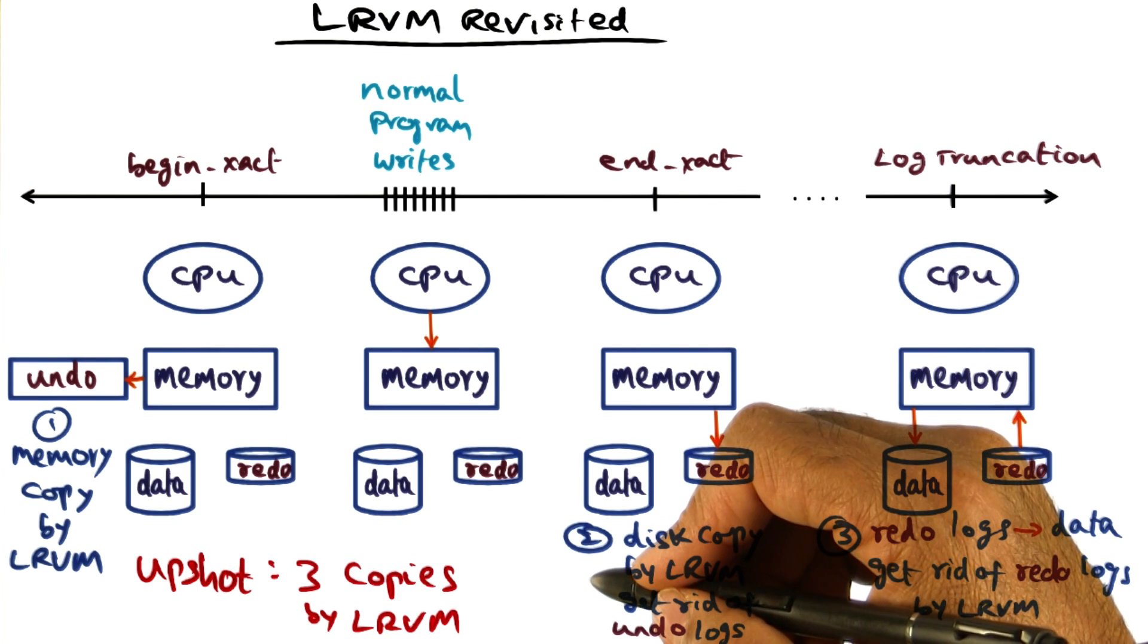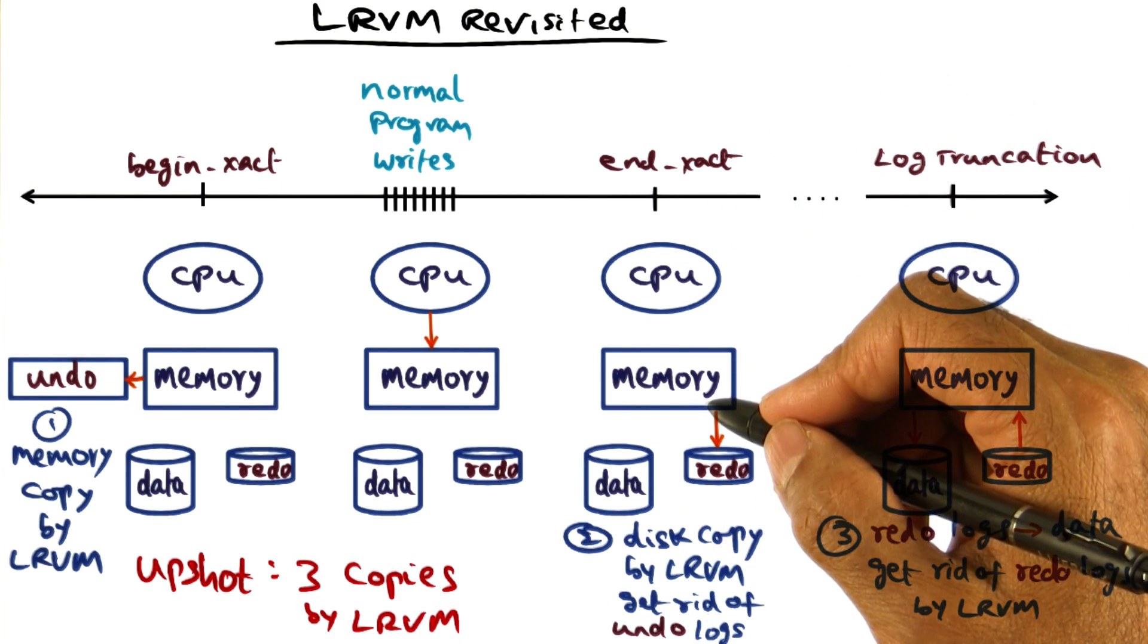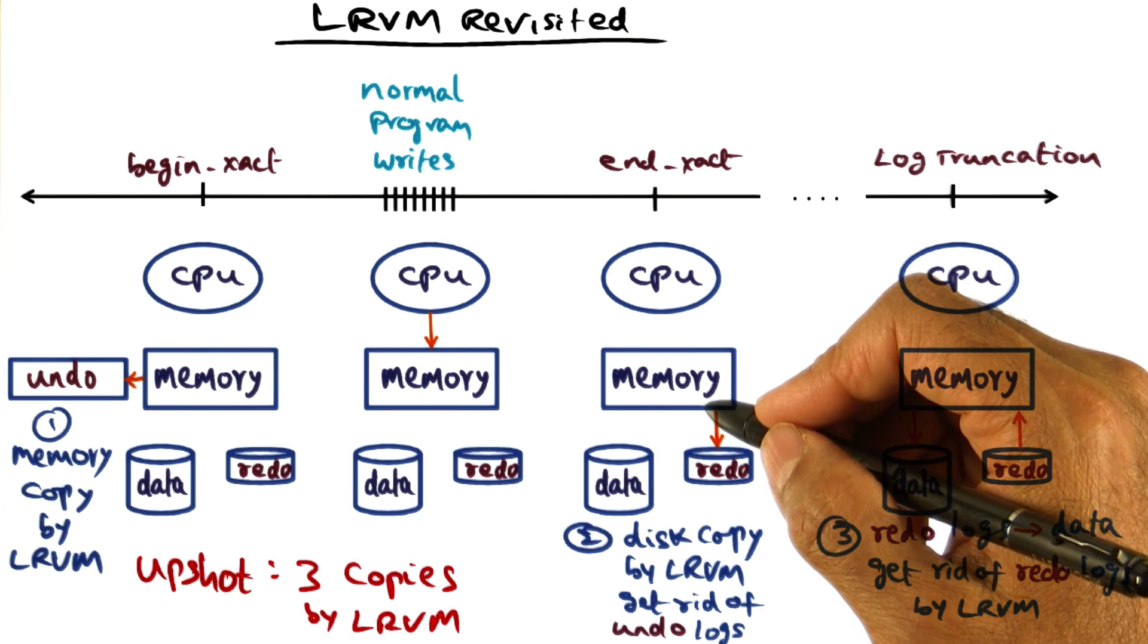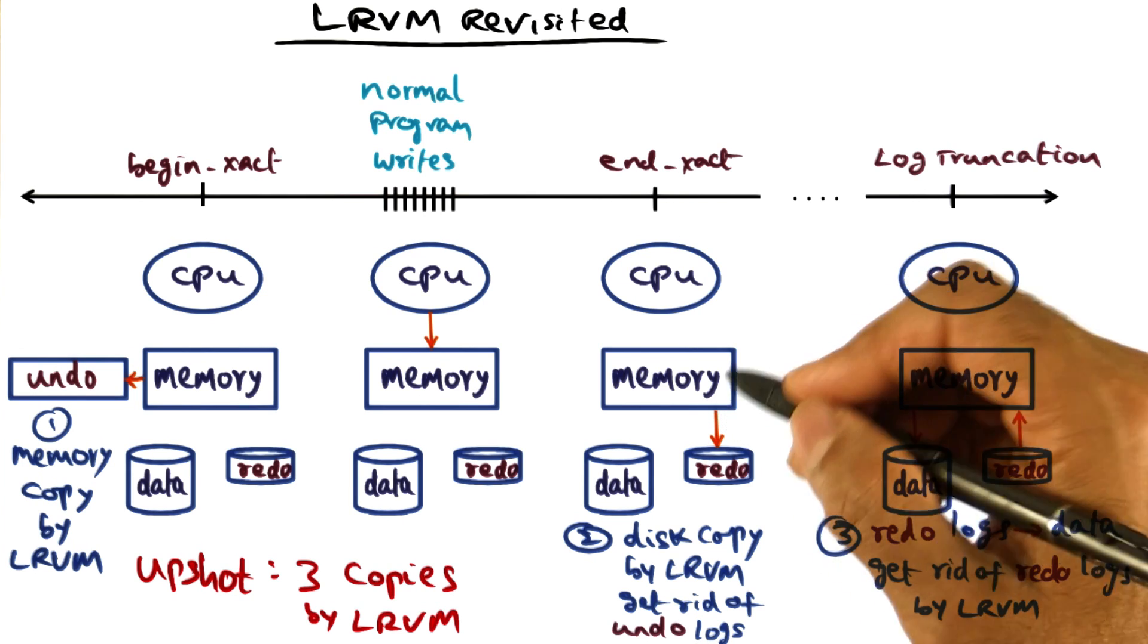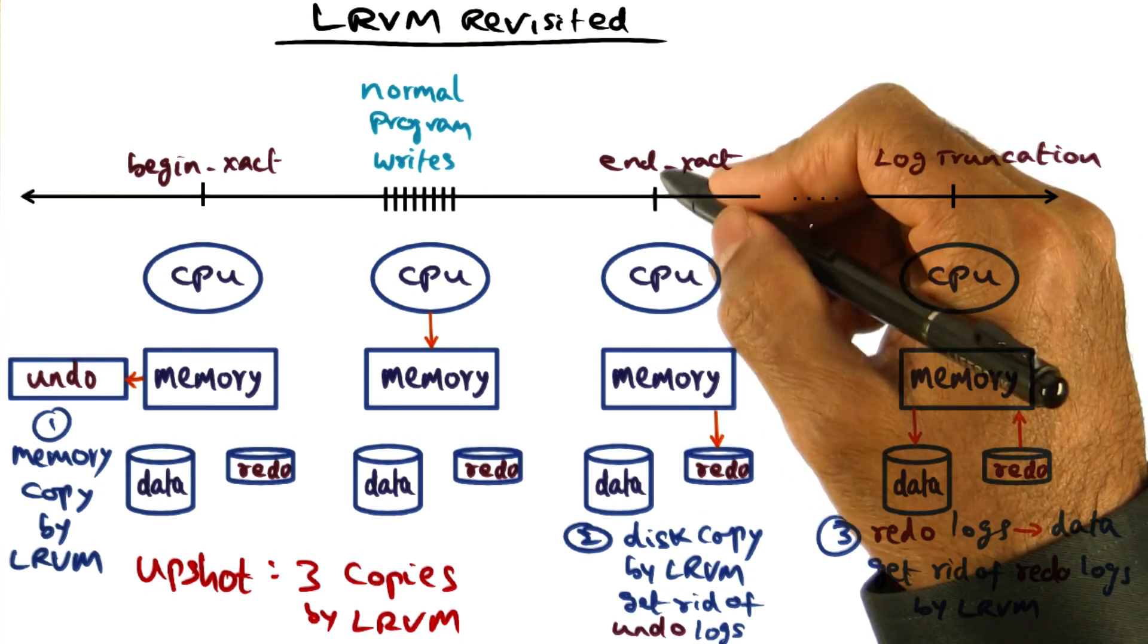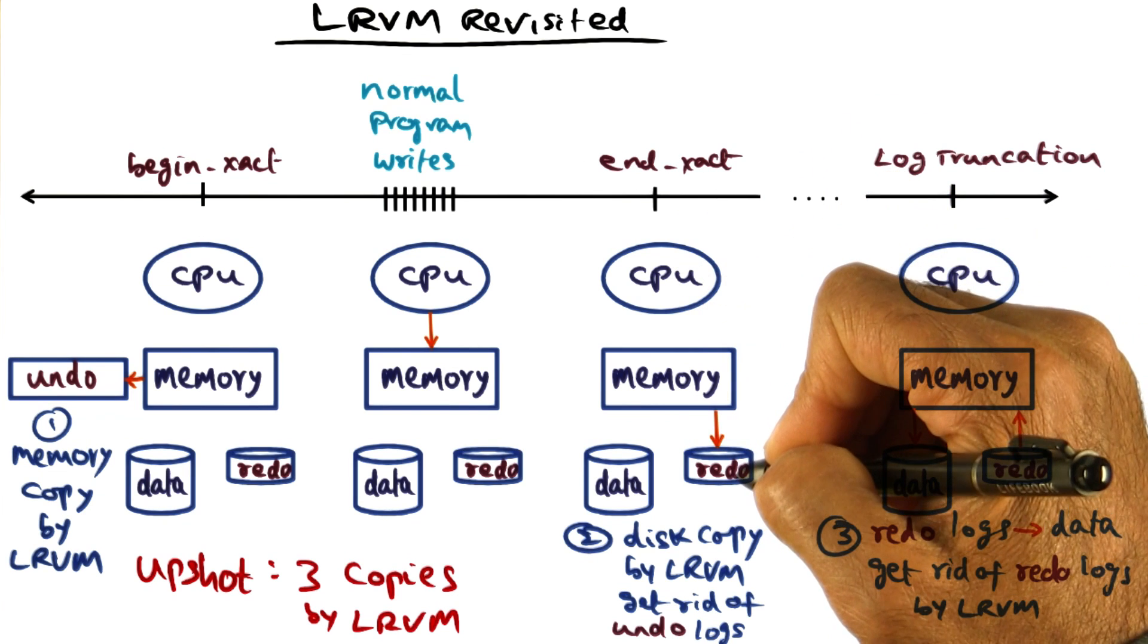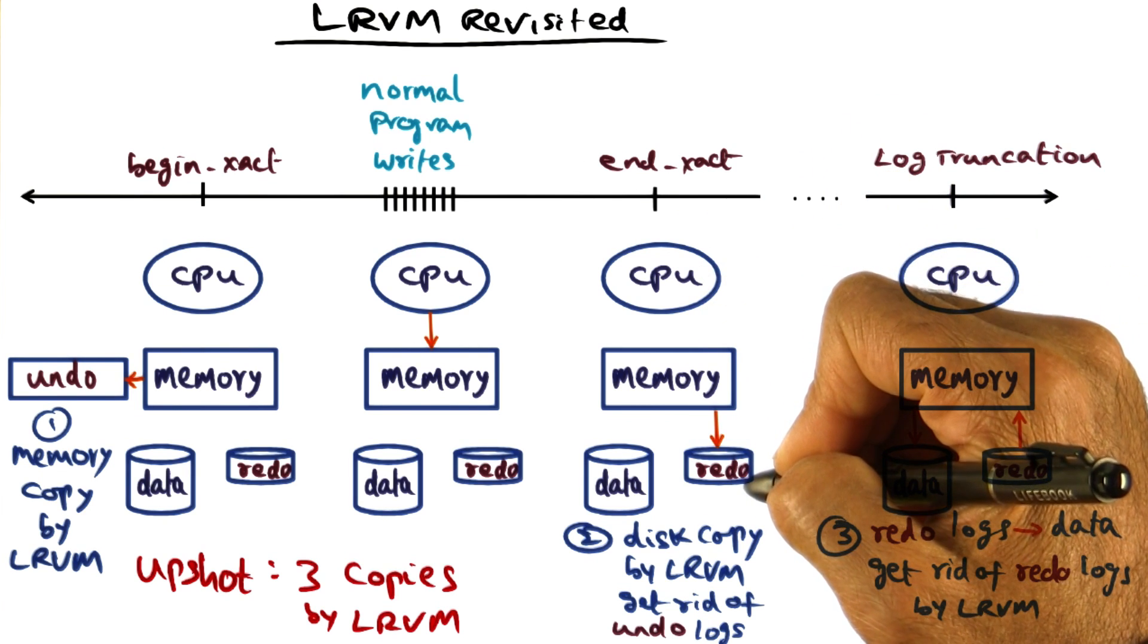Of course it optimizes log force by delaying them at transaction endpoint, but in implementing LRVM, one of the biggest source of vulnerability is power failure. Because if you, in fact, use that optimization to defer writing out the log record to the permanent storage,